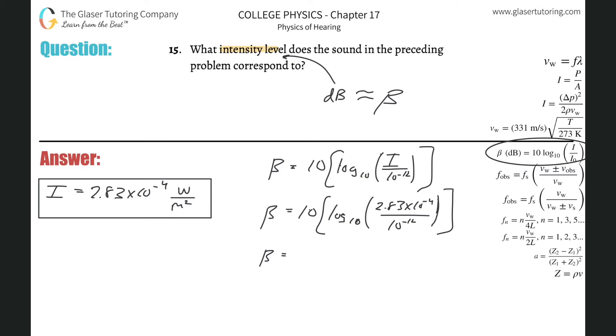All you got to do here is hit log and then literally type in 2.83 times 10 to the negative 4th divided then by 10 raised to the negative 12th. All right, get that value. So that value, the log of that, is about 8.45. And then take that, multiply it by 10, and that'll be your decibel value. So this is about 84.5.